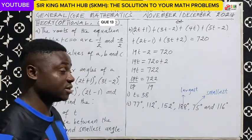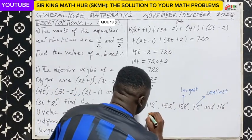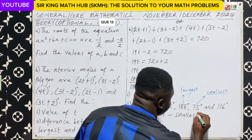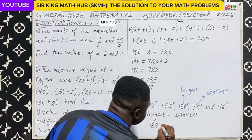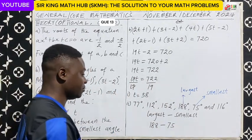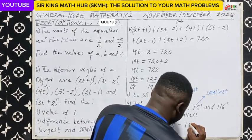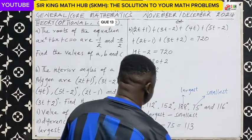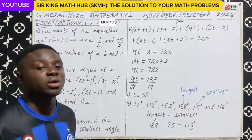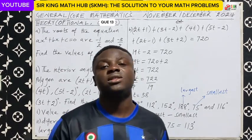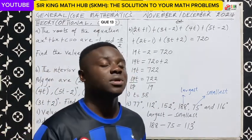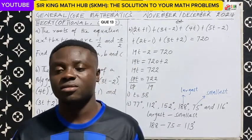To find the difference, we subtract: largest minus smallest, which is 188 minus 75, that is 113 degrees. I hope you enjoyed this episode. Please don't forget to subscribe, comment under the comment section, and share the link for others to also benefit. Thanks for your time and attention, bye.